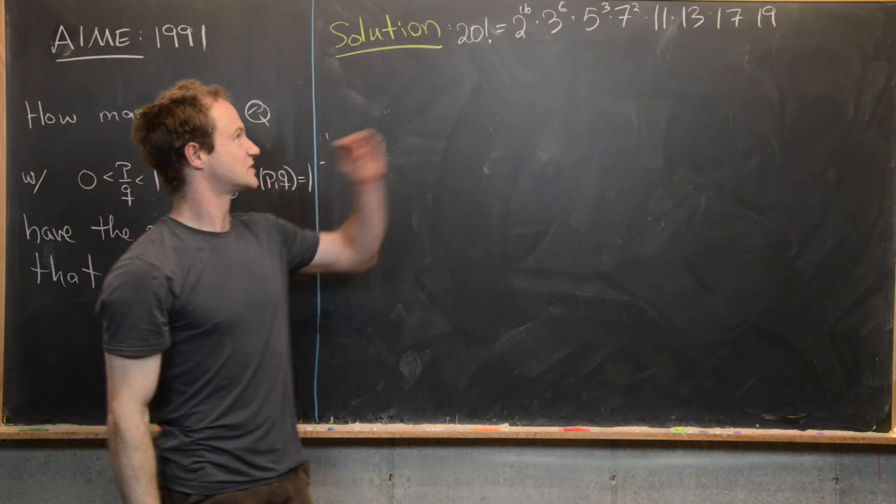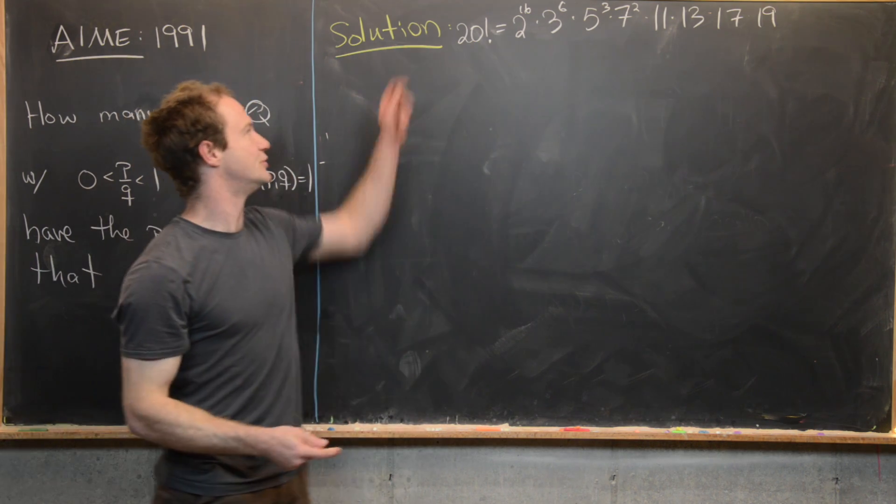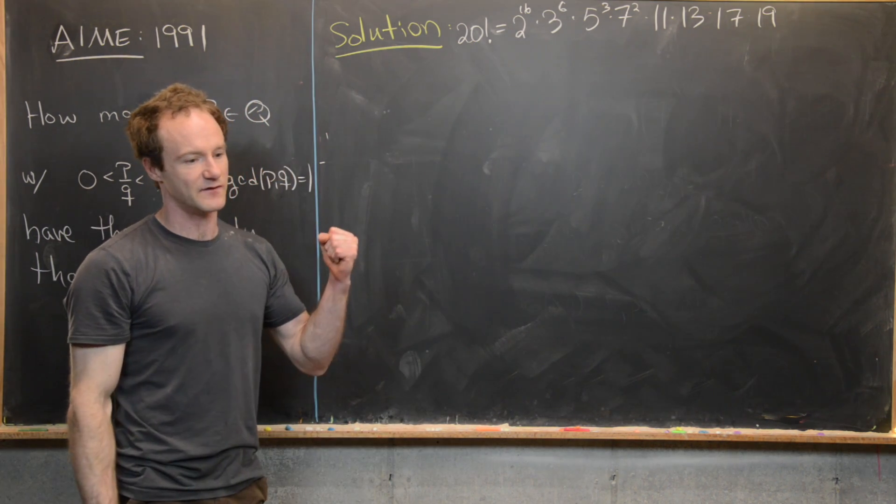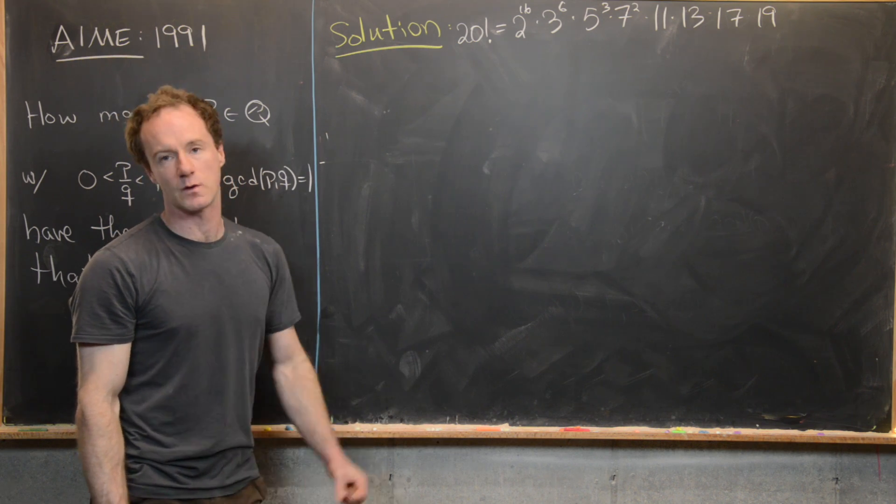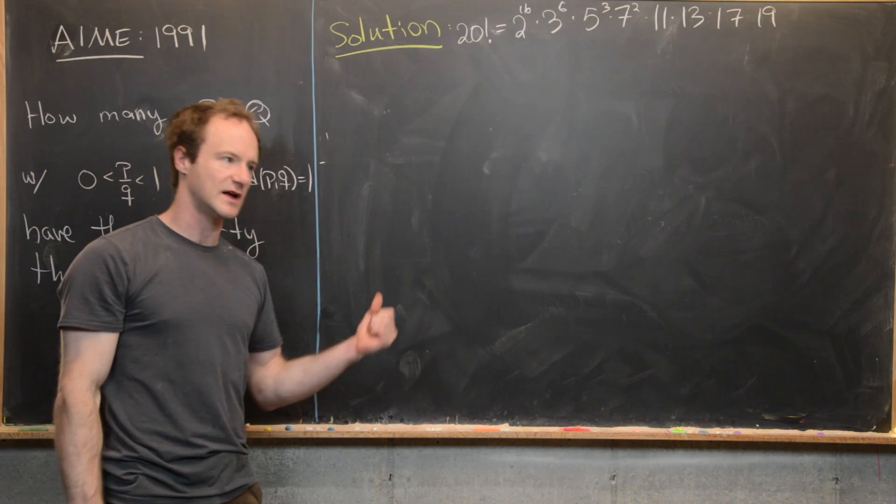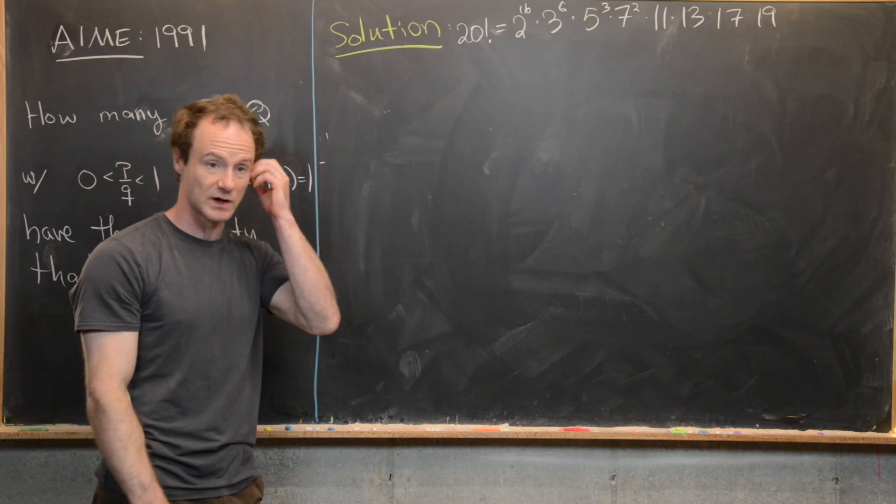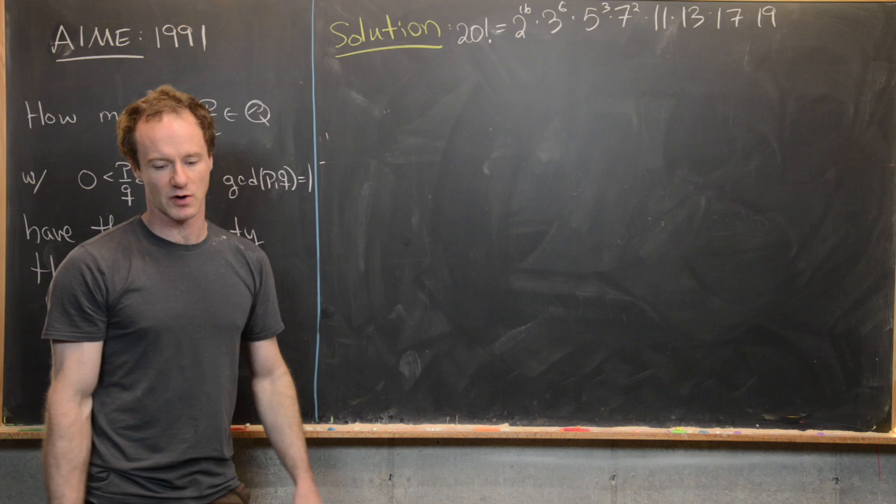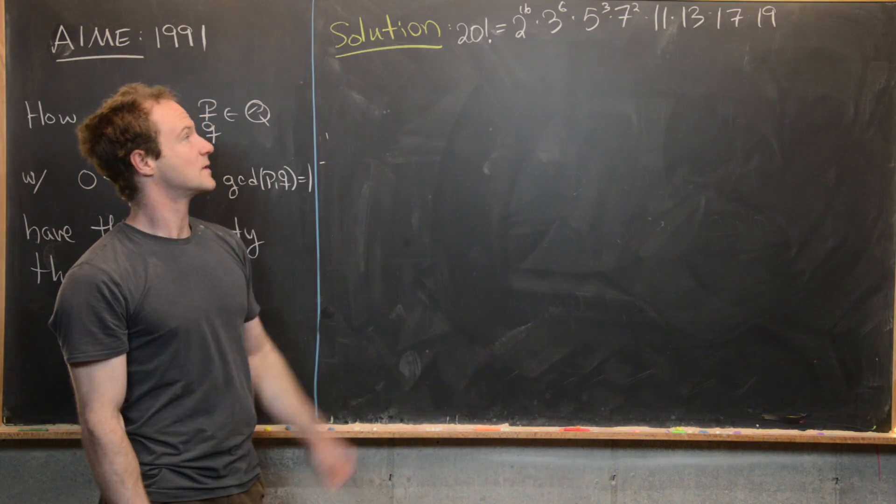There's a trick to count up the number of times 2 divides into 20 factorial. It's the number of even numbers between 1 and 20 plus the number of multiples of 4 between 1 and 20 plus the number of multiples of 8 between 1 and 20 and so on. And that's the game you can play for all of these prime factors.